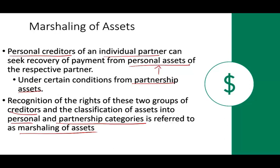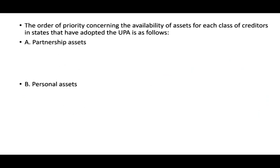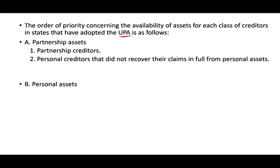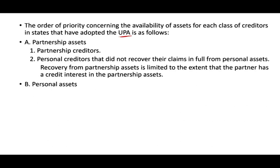The recognition of the rights of these two groups — personal creditors and business creditors — and the classification of assets into personal assets and partnership categories is referred to as marshalling of assets. Under UPA, partnership assets are available to partnership creditors first. Personal creditors who did not recover their full claim from personal assets can recover from partnership assets, but only to the extent that the partner has a credit interest in the partnership.